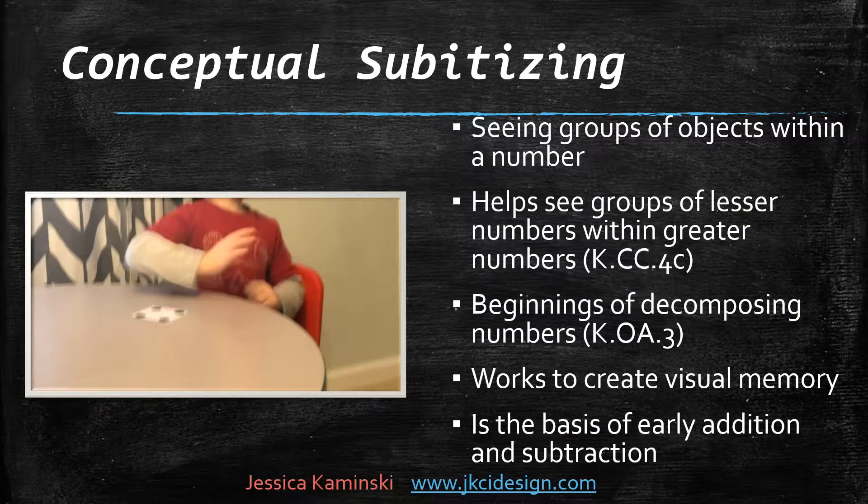The next step in subitizing is conceptual subitizing. This is where students see groups of objects within a number. It's going to help kindergarten students see that greater numbers are made of the numbers before it, and it's the beginning of decomposing numbers. This works to create visual memory and is the basis of early addition and subtraction.